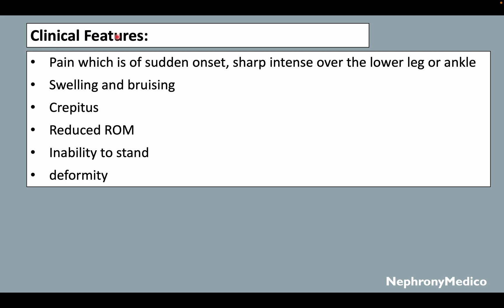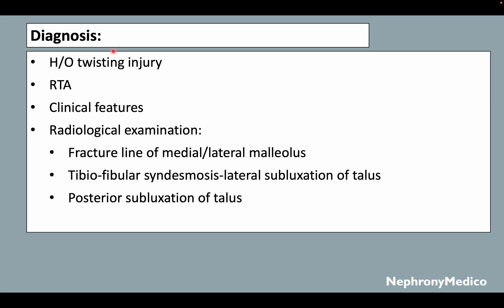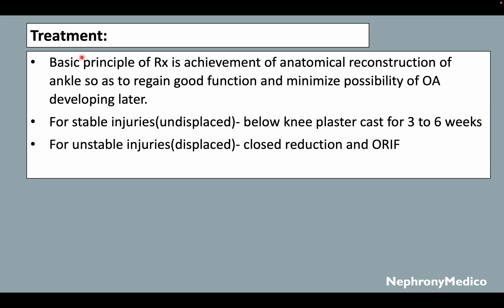Clinical features include pain of sudden onset — sharp and intense over the lower leg and ankle — swelling and bruising, crepitus, reduced range of motion, inability to extend, and deformity. Diagnosis is based on a history of twisting injury or road traffic accident, clinical features, and radiological examination showing a fracture line of the medial or lateral malleolus, tibiofibular syndesmosis disruption, or lateral or posterior subluxation of the talus.